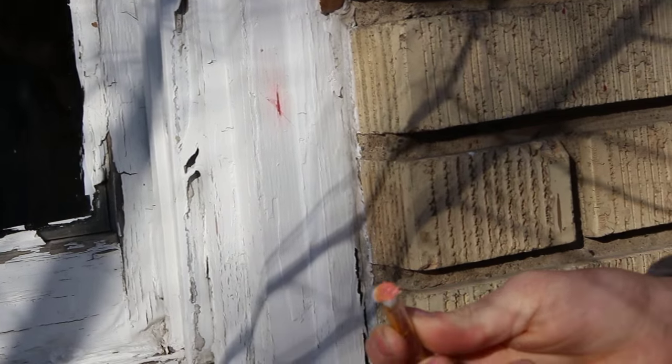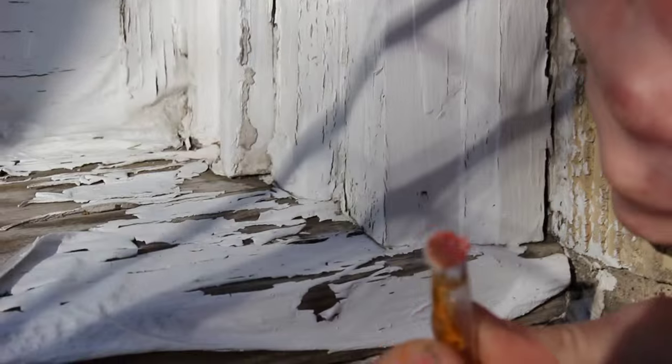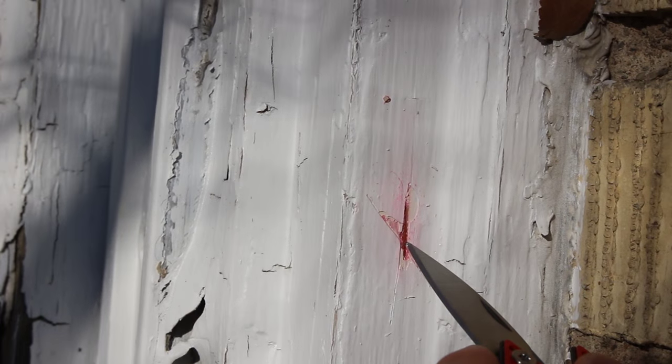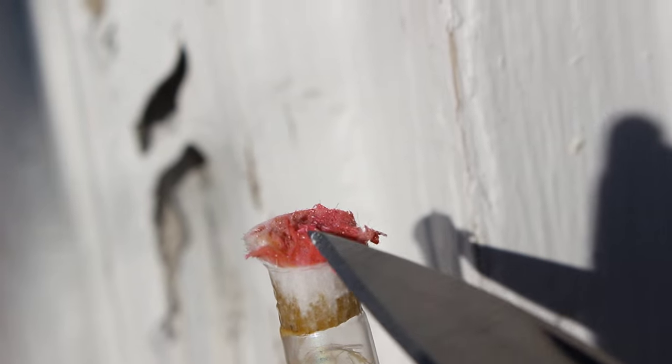Okay, I definitely see some red color. It looks like the paint underneath this outer one actually contains the most lead. See how it turned a nice pink color in there? That's definitely lead right there.